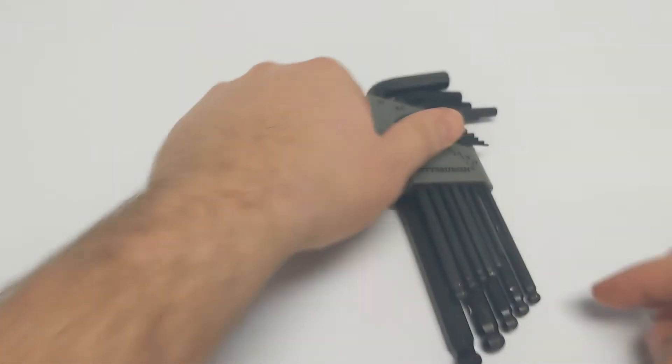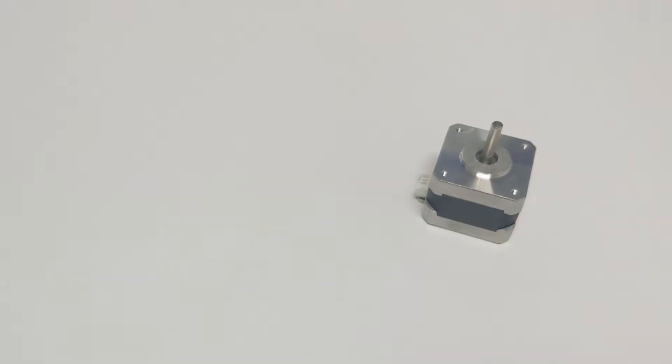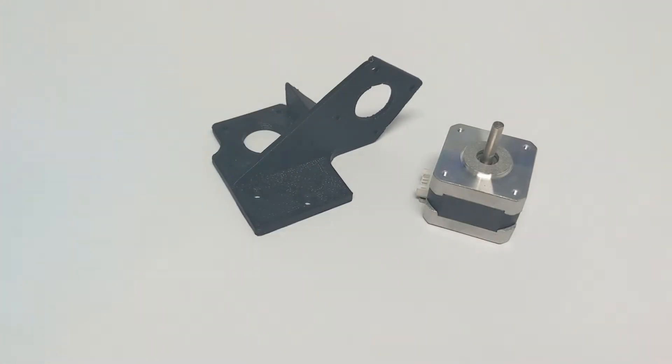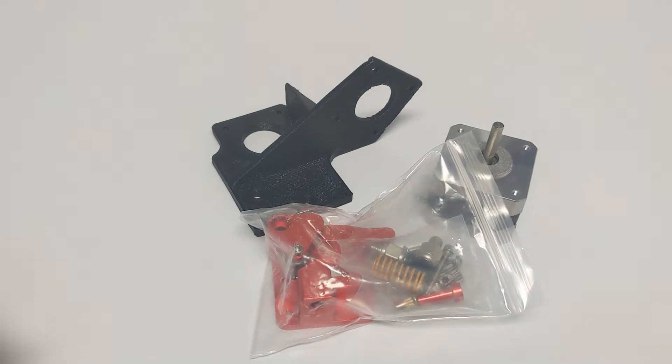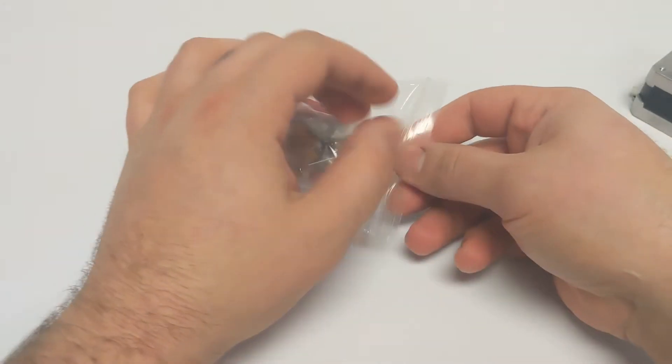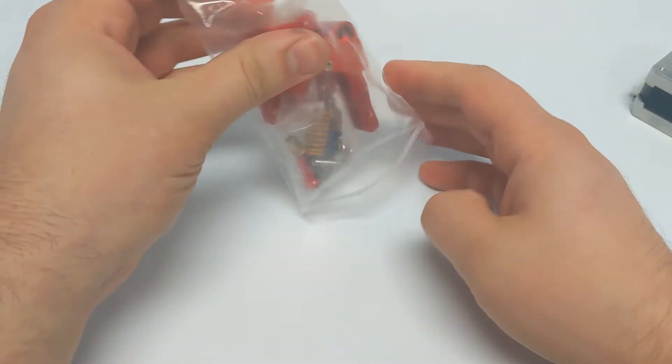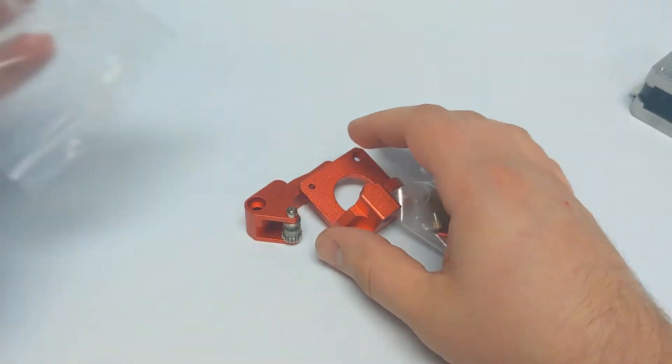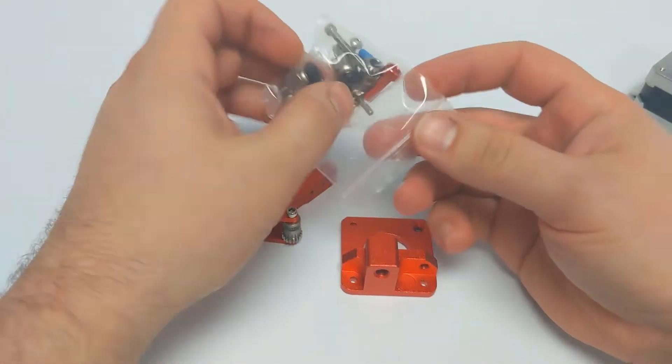So to assemble this extruder, you're going to need some hex keys, the extruder kit, a stepper motor, and whatever your stepper motor will be mounted to. Let's open up the extruder kit, which has a couple anodized aluminum parts and a whole bunch of small hardware.